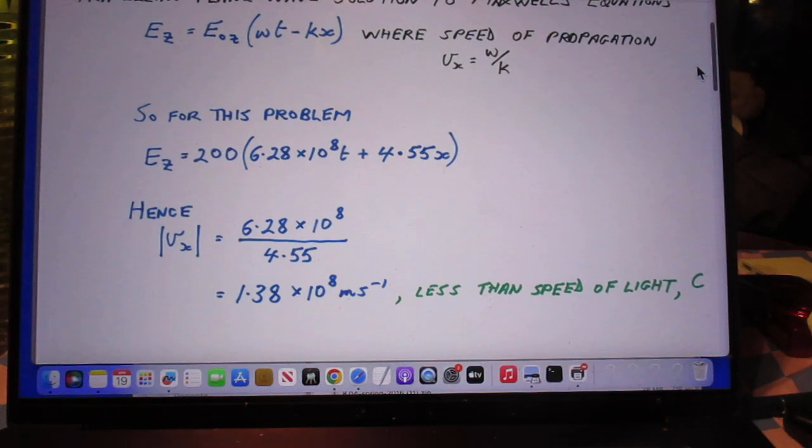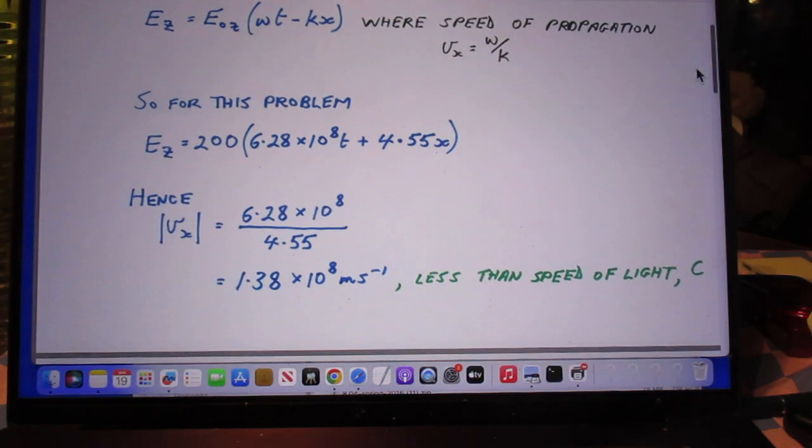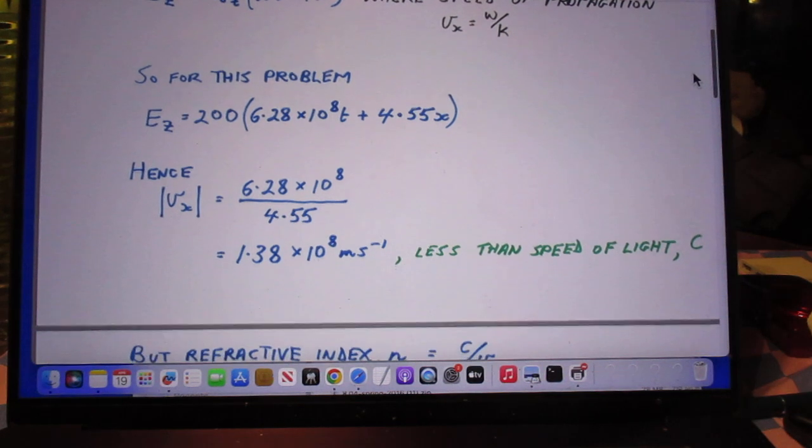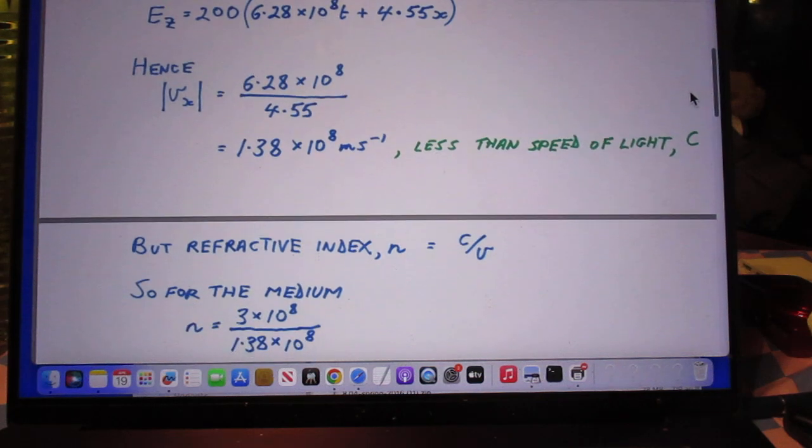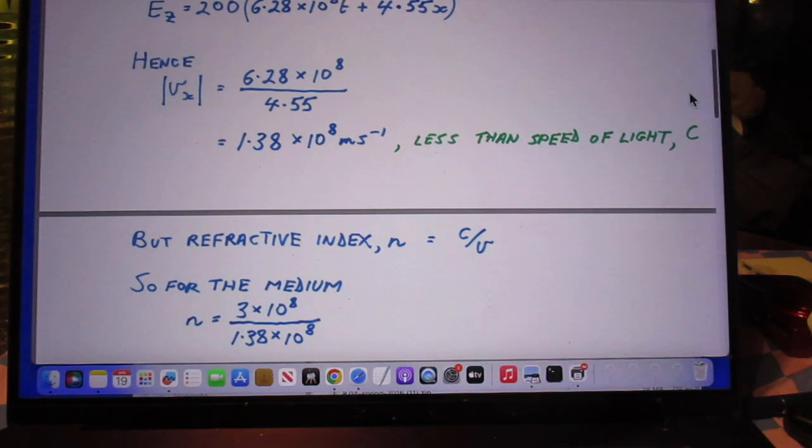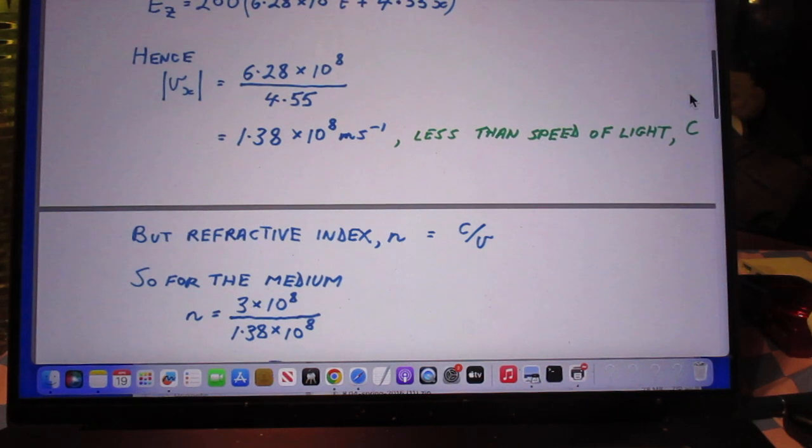Thus for this problem, he finds that the speed in the x direction is 1.38 times 10^8 meters per second, which is less of course than the speed of light.